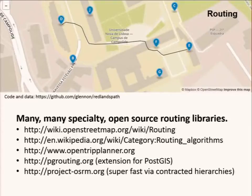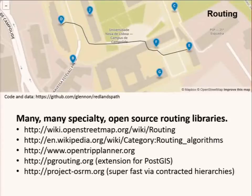Then you get to the Google-esque super hot rod version, which is the Open Source Routing Machine. It uses contraction hierarchies and pre-computing, and a bidirectional algorithm to make it look crazy fast. It's kind of like what Google does — you can drag your route around and it looks like it's doing it in real time. If you're just discovering routing algorithms, I have an example.